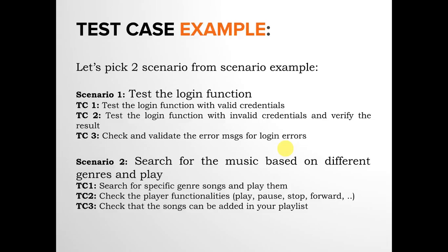Taking scenario two as an example — search for music based on different genres and play — the test cases could be: search for specific genre songs and play them. Check the player functionalities: play, pause, stop, and forward. There could be multiple test cases for each activity — for play, pause, stop, and forward separately. Test case three can be: check that songs can be added into your playlist.